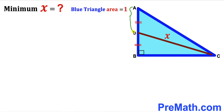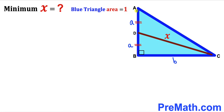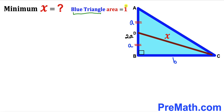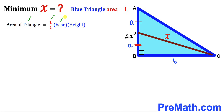We know that segment AD length equals segment BD length, so I'm going to label this segment length as lowercase a, and this segment length is lowercase a as well. I'm going to label side BC length as lowercase b. The whole side AB length is going to be a plus a, giving us 2 times a. We know that blue triangle ABC area equals one square unit, so let's recall the area formula: area equals one half times base times height. The base is b, the height is 2a, and the area is 1.